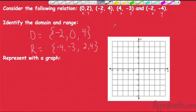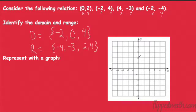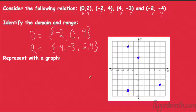We could then, of course, plot these as points. (0, 2) — 0 over, 2 up, that's one point. Negative 2 over, 4 up — that's another point. (4, negative 3) — 1, 2, 3 — that's another point. And then (negative 2, negative 4) — that right there is our fourth point. So this is all stuff you've done before, but we're going to talk about domain and range — these are very important things.